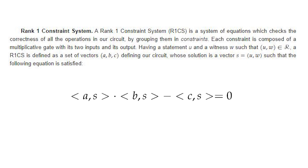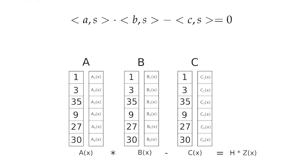It does this by grouping the polynomials into constraints, which is a set of vectors that satisfy the public statement and witness whose solution is the vector s. It looks something like this, where a, b, c, and s are vectors.